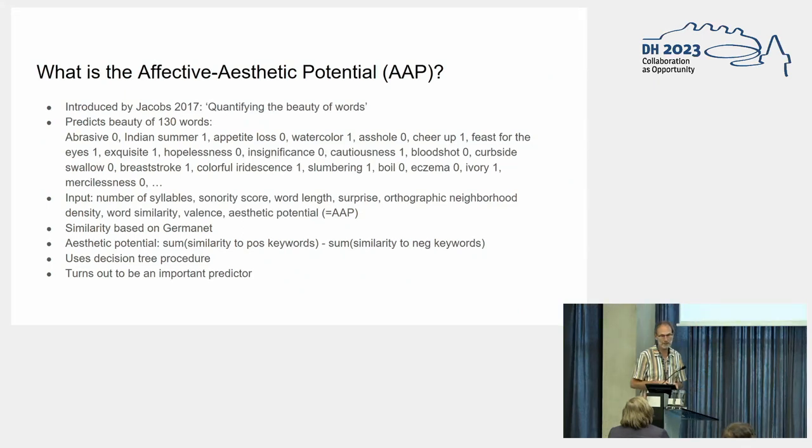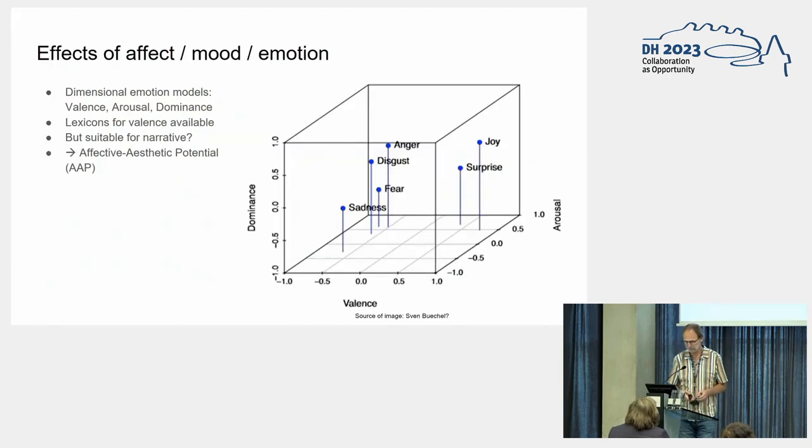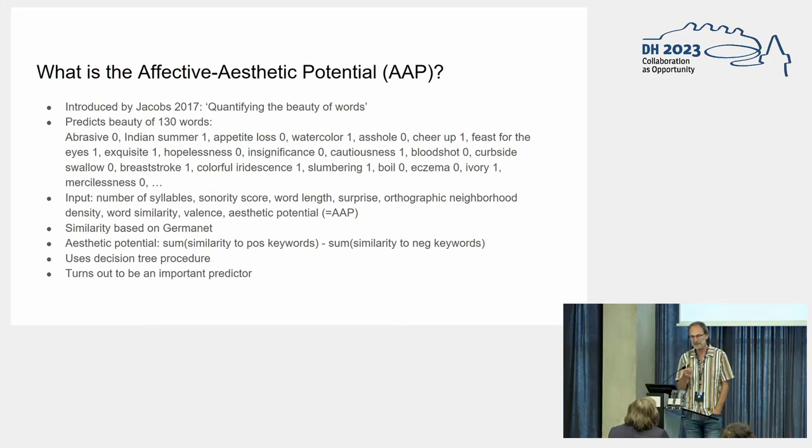He uses a number of different input fields to try to explain this beauty: number of syllables, sonority sound, word length, surprise value, and other values. But also this aesthetic potential, later renamed to affective aesthetic potential, is really the similarity to a number of positive keywords minus the similarity to a number of negative keywords. The similarity is based on German net, which is sort of WordNet for German. The prediction uses a decision procedure and the aesthetic potential actually turns out to be an important predictor.